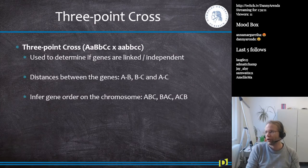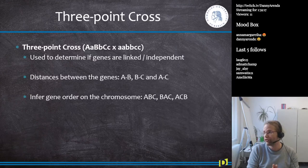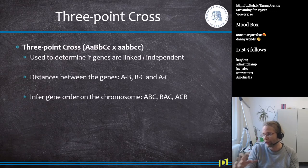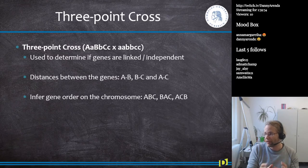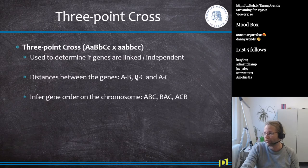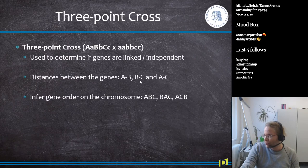Besides the two-point cross, a three-point cross uses three genes instead of two. It can be used to determine if these three genes are linked or independent — whether all three are on different chromosomes, or two are on one chromosome and one on another. If all three Mendelian phenotypes are on the same chromosome, we can calculate the distance from A to B, B to C, and A to C.